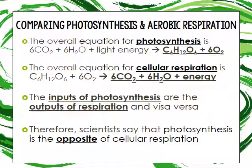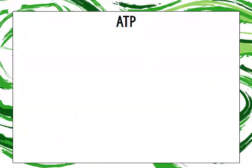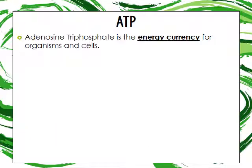The inputs for photosynthesis are the outputs for respiration, and vice versa. Scientists have a tendency to say that photosynthesis is the opposite of cellular respiration. Now let's talk about what ATP is — ATP is adenosine triphosphate.